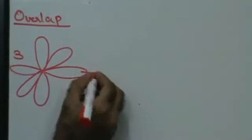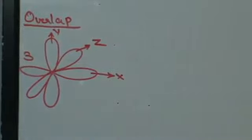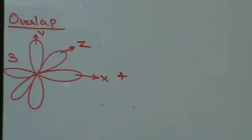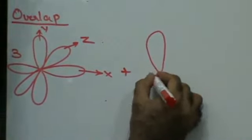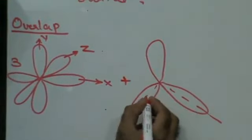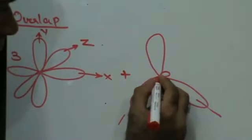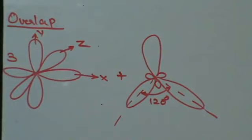In the overlap for Boron Trifluoride, Boron is going to combine with Fluorine. You will have three atoms of Fluorine — this is along the x-axis, y-axis, and z-axis. This is the unhybridized fluorine atom which will combine with the sp2 hybrid orbitals. Since it has to have maximum symmetry and distance, the bond angles so that the three orbitals are at maximum distance from each other is going to be 120 degrees. This is the other half of the globe, and this is the 2p orbital of Fluorine.